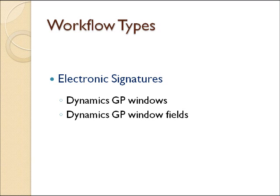There's a fourth type of workflow called electronic signatures. It's a separate module available where you can actually select a window or fields on a window to have approval capabilities. Anybody can't just go in and change it — they have to have approval to make that change, and it tracks who's the person that makes the change. It interacts with the workflow to facilitate that process. We're not going to look at that today because we don't have electronic signatures installed on this server, but if there's some area inside of Great Plains where you want to put workflow, you can use electronic signatures to accomplish that if it's not in the out-of-box capability.